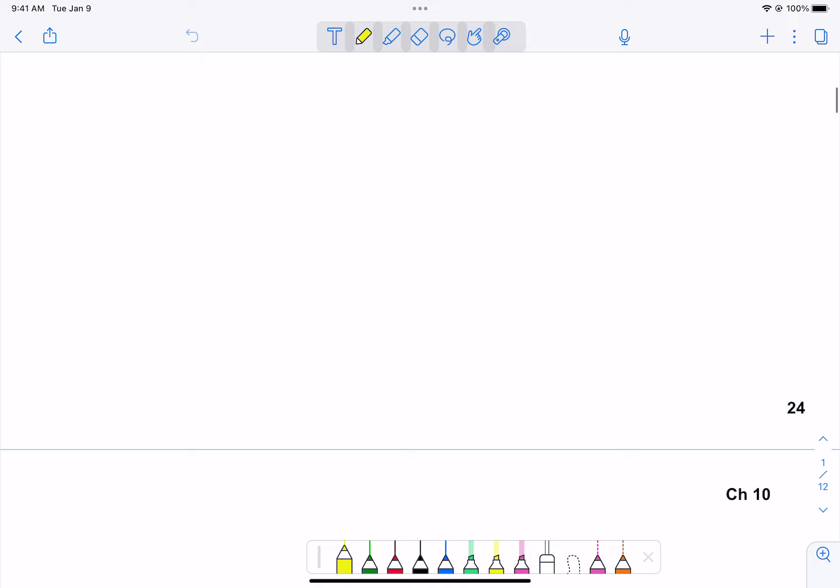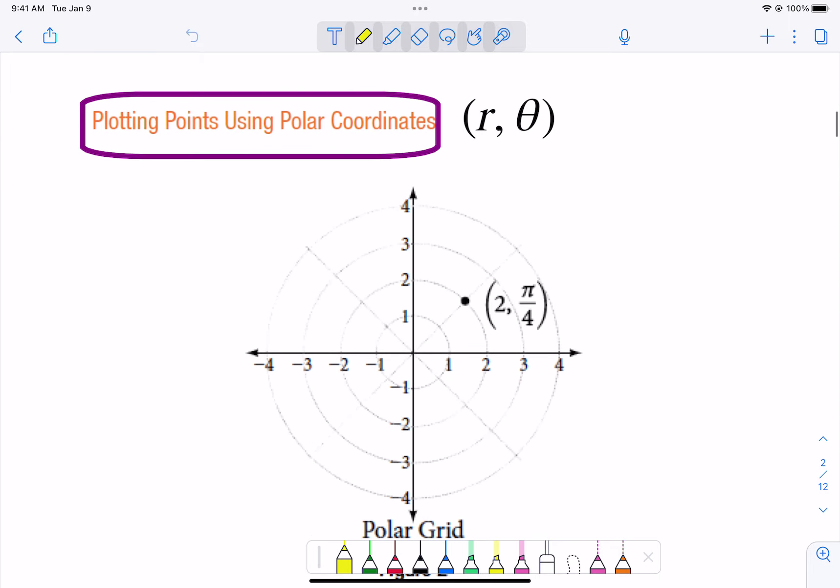Polar coordinates blend themselves very well with trigonometry. When you are plotting points using polar coordinates, the r stands for the radius and theta stands for the angle measure.